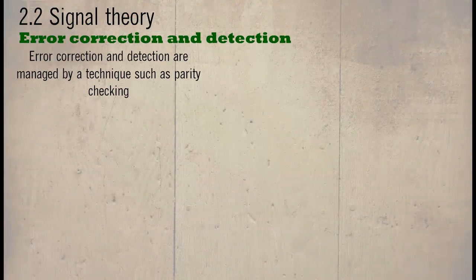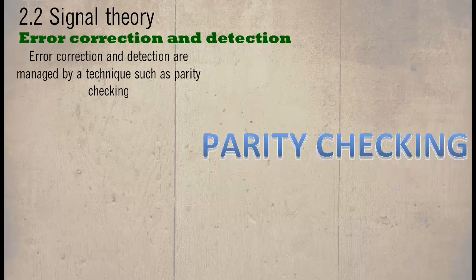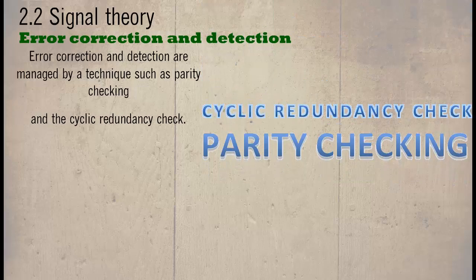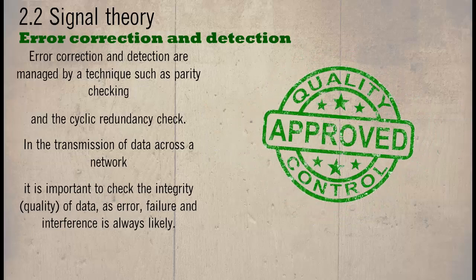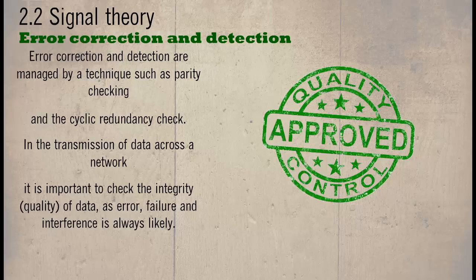Error correction and detection are managed by techniques such as parity checking and the cyclic redundancy check. In the transmission of data across a network, it is important to check the integrity or quality of the data, as error, failure, and interference are always likely.